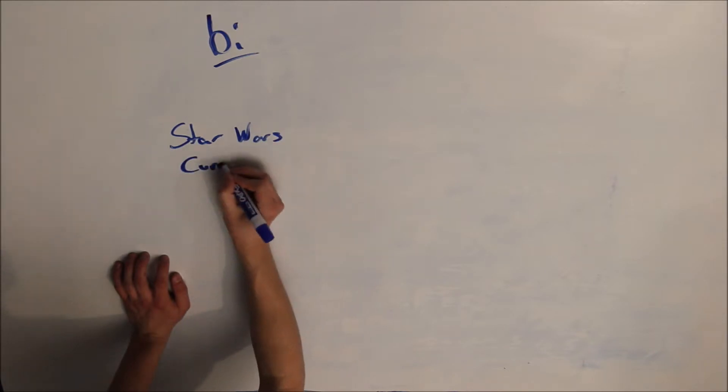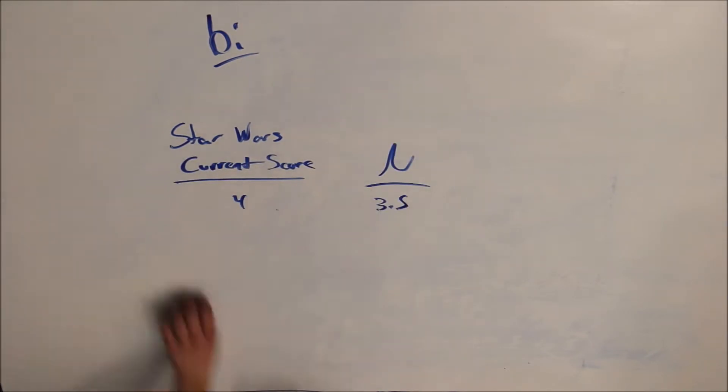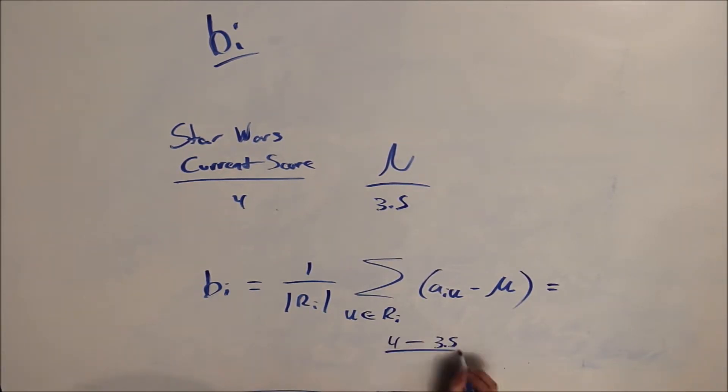Solving for B of i is actually the simplest thing to solve for. All you have to do is subtract the average rating of Star Wars from the average of all movies in order to see how positive or negative it is when compared to the total, which in this case is 0.5 higher.